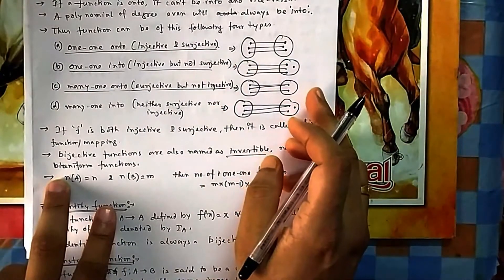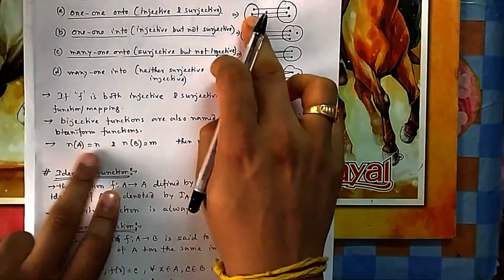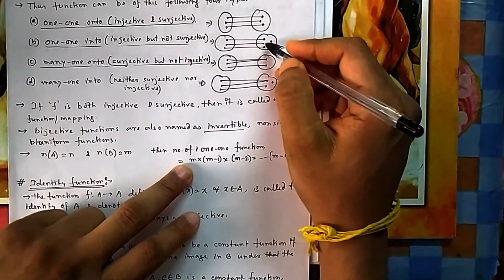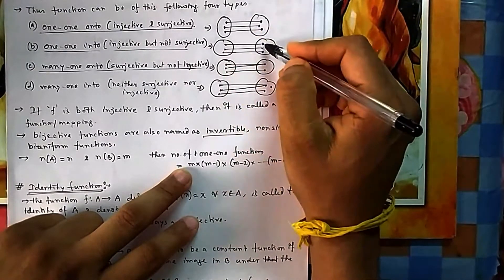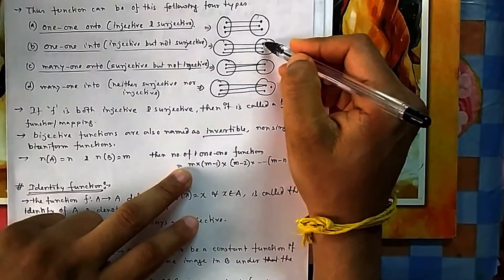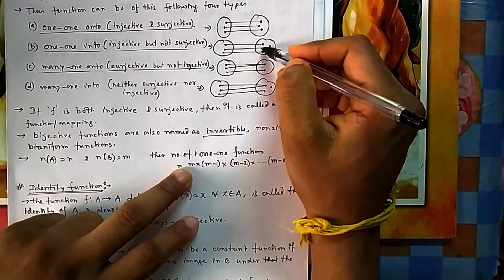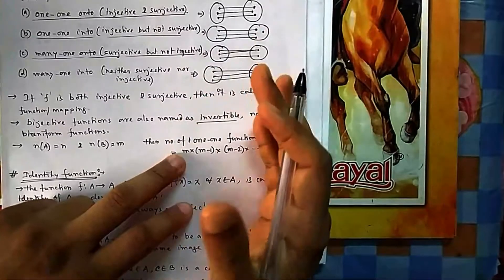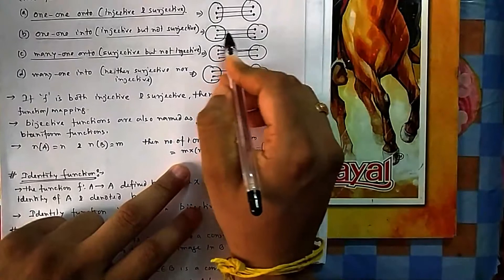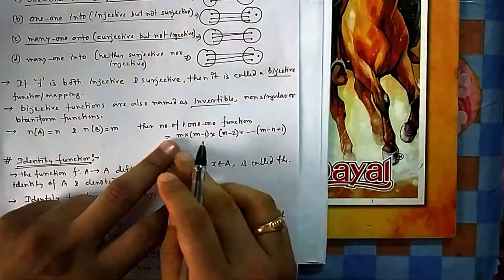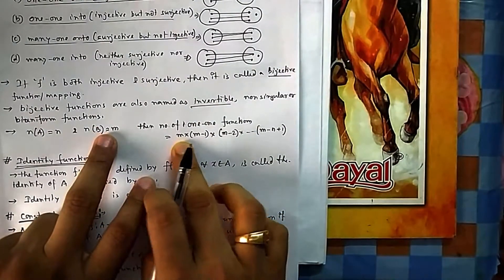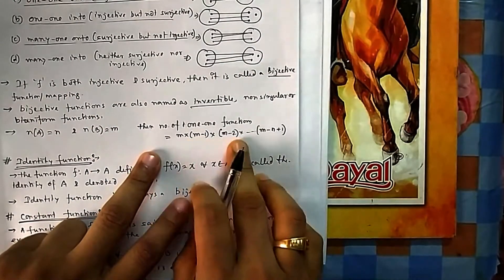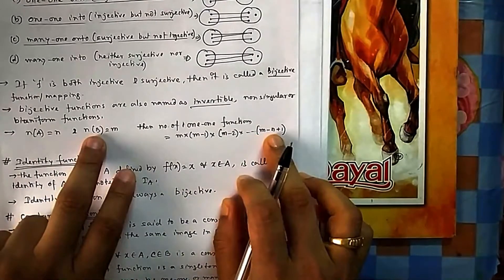If n is the number of elements in set A and m is the number of elements in B, the number of one-one mappings is: m × (m−1) × (m−2) × ... × (m−n+1). Each element of A gets one fewer choice. If both sets have n elements, this becomes n factorial.